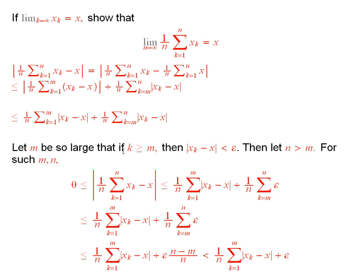Now, I'm going to let m be large, like I just said, so that if k is bigger than or equal to m, then this difference is smaller than epsilon. And then I will always let n be bigger than this given m. So, from now on, you see m is just going to be fixed. So, for such m and n, the 0 is less than or equal to this, and that's less than or equal to this sum here.